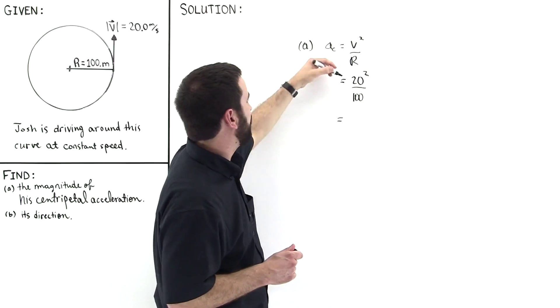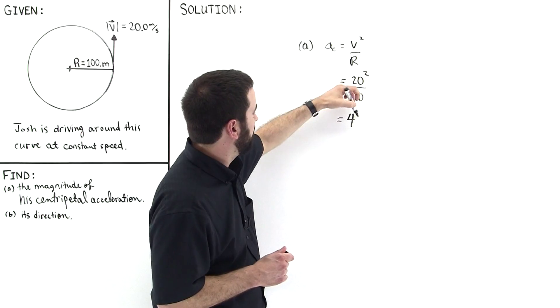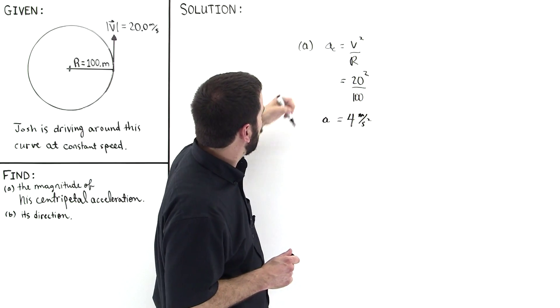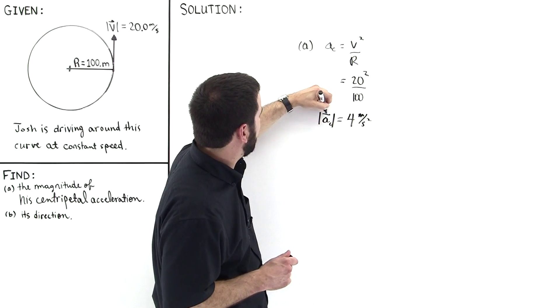And this is equal to 400, 20 squared is 400, divided by 100, this is equal to 4 meters per second squared. So this is the magnitude of the centripetal acceleration, so we could express it like so.